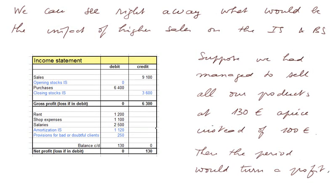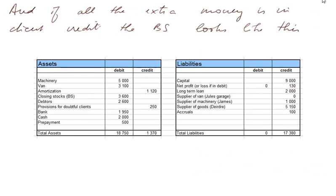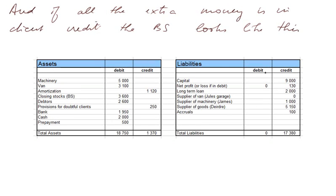This would be the impact on the income statement. There would also be an impact on the balance sheet. Suppose the extra 2,100 euros was entirely in client credit — it would appear here: the debtor balance was 500, now it's 2,600. Everything else is the same. On the liability side, the profit, instead of being a loss in debit, is now 130 in credit — it is actually a profit. So this is the impact on both statements of just one change in the accounting.